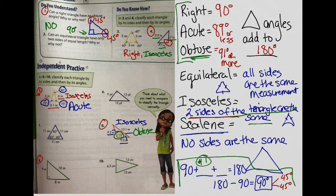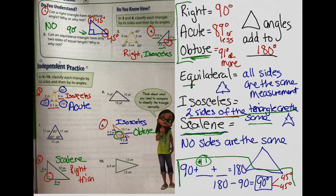Example nine has sides of six meters, 10 meters, and eight meters — all different measurements. Since no sides are the same, this is not equilateral or isosceles; it's going to be scalene. Now for the angles: look at the little box indicating a 90-degree angle — that's a right triangle. So this is a scalene right triangle. Go ahead and try the rest on your own.